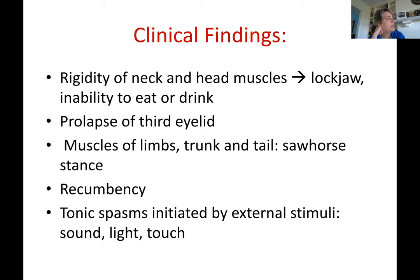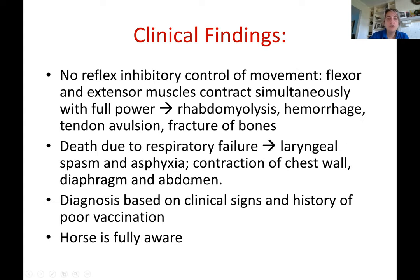A horse in recumbency must be turned every two hours, kept on IV fluids, in a padded stall to prevent thrashing injuries, and fitted with helmets and eye masks for protection. It is a very expensive disease to treat, when prevention is close to 100% effective with vaccines.